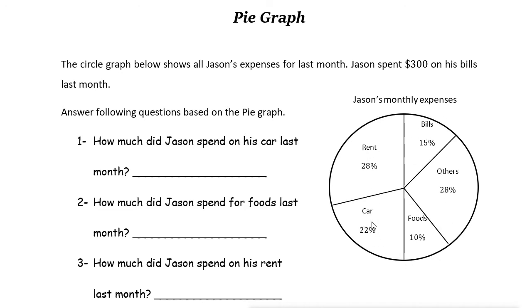Bills, rent, car, foods, and other. Now let's take a look at this example. Let's solve this example. The circle graph below shows all Jason's expenses for last month. Jason spent $300 on his bills last month.